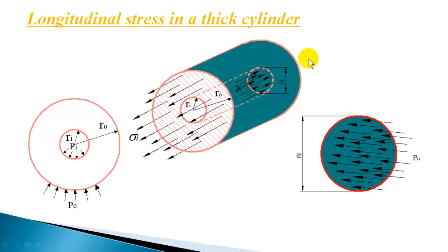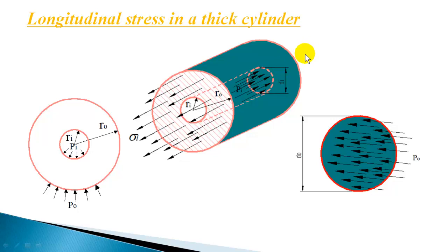This axial force has to be resisted by the cylinder cross section. I have shown the sectional view of the cylinder — this cross section has to resist the axial force. The axial force which is pulling the cylinder, divided by the cross-sectional area of the cylinder walls, will give the longitudinal stress (or axial stress) induced in the cylinder walls. The hatched area is resisting this axial force.